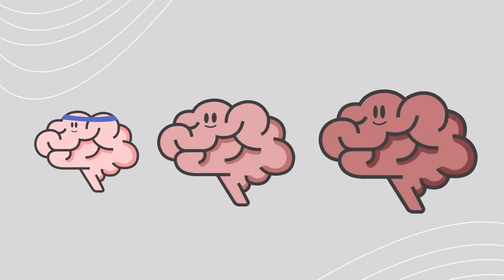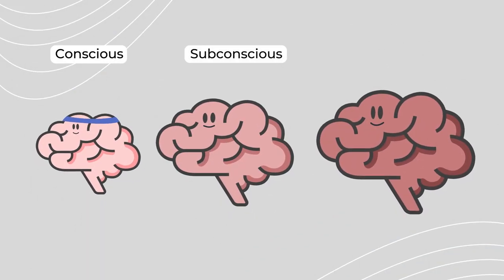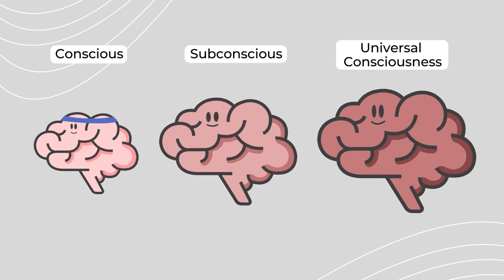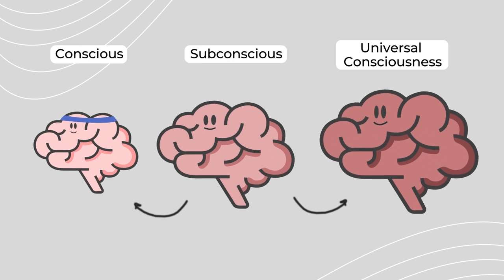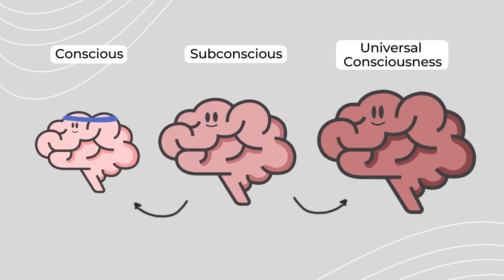In a way, Murphy is saying you have three minds: the conscious, subconscious, and universal consciousness. Your subconscious has access to universal consciousness and uses it along with your conscious thoughts to form your life experiences.